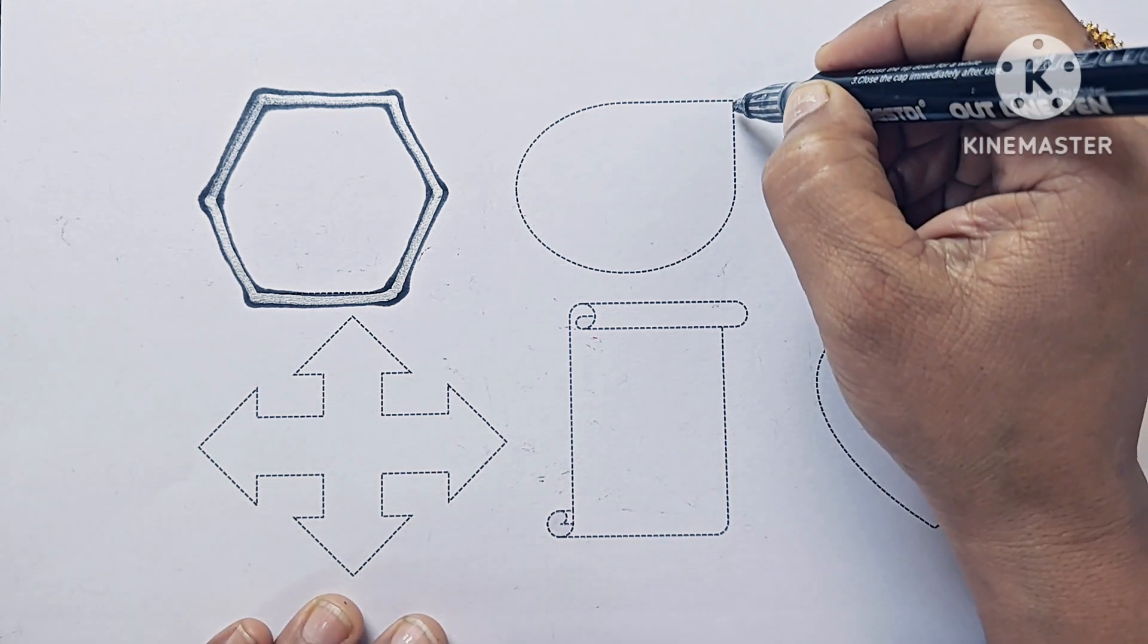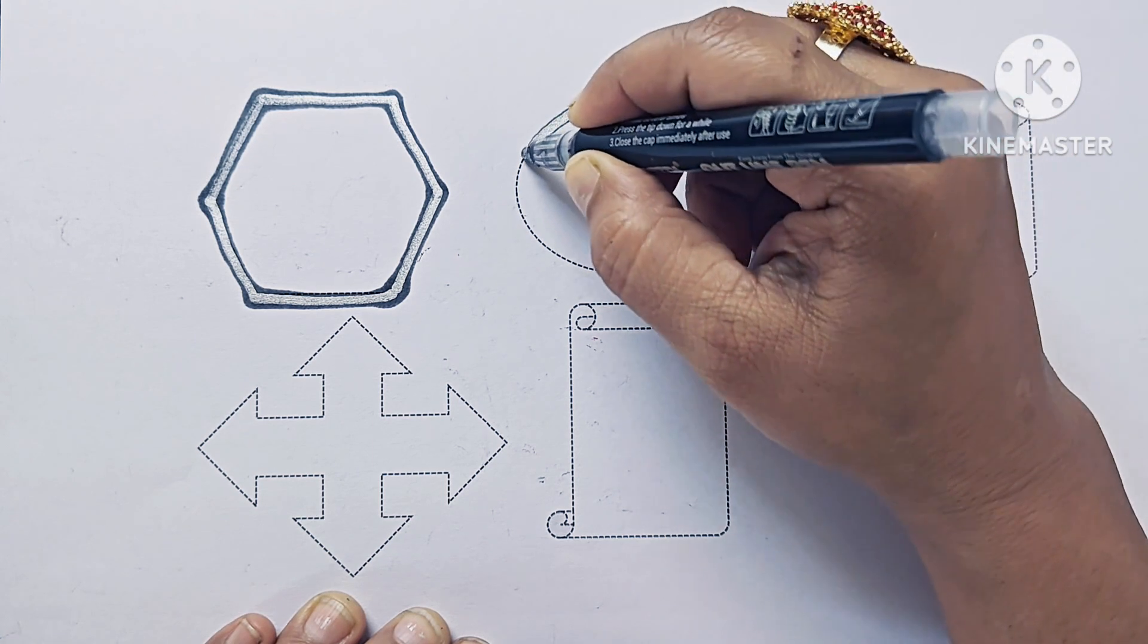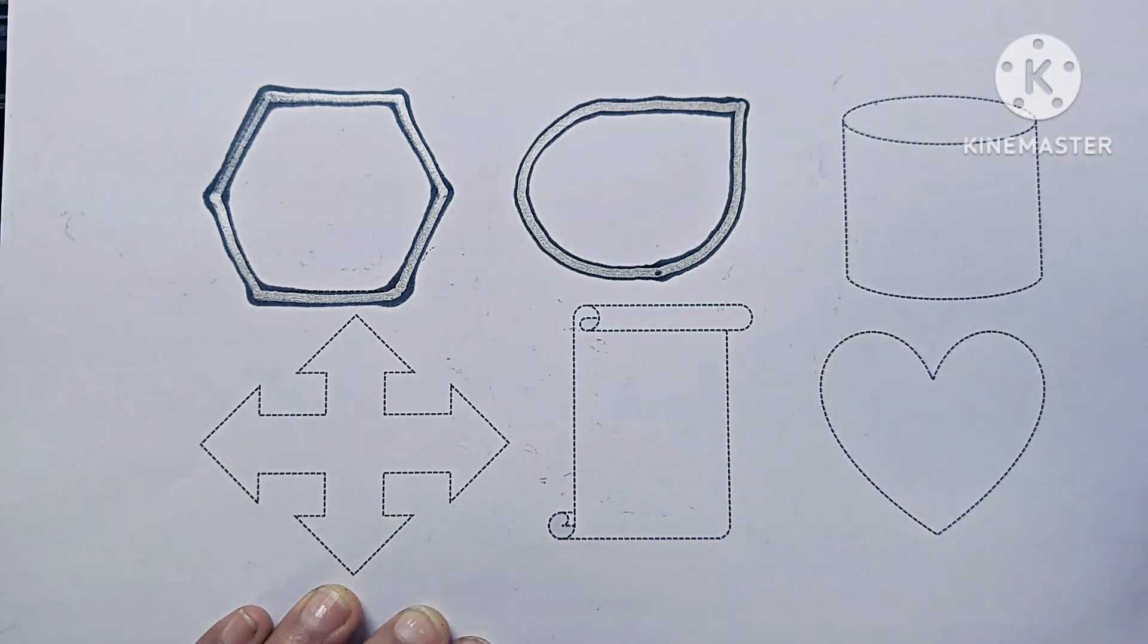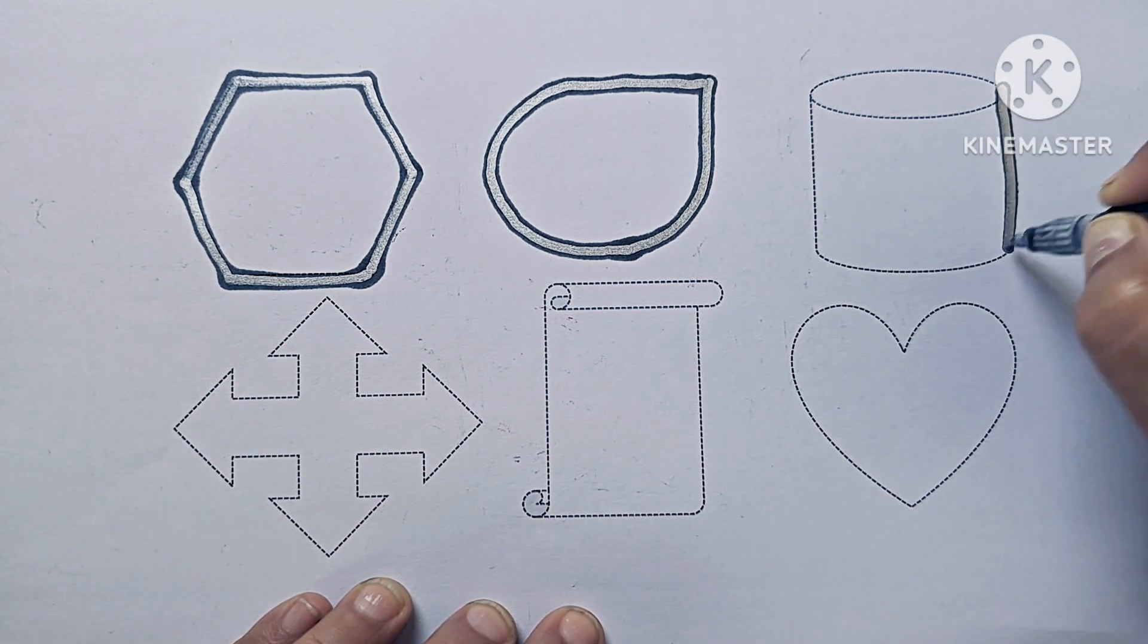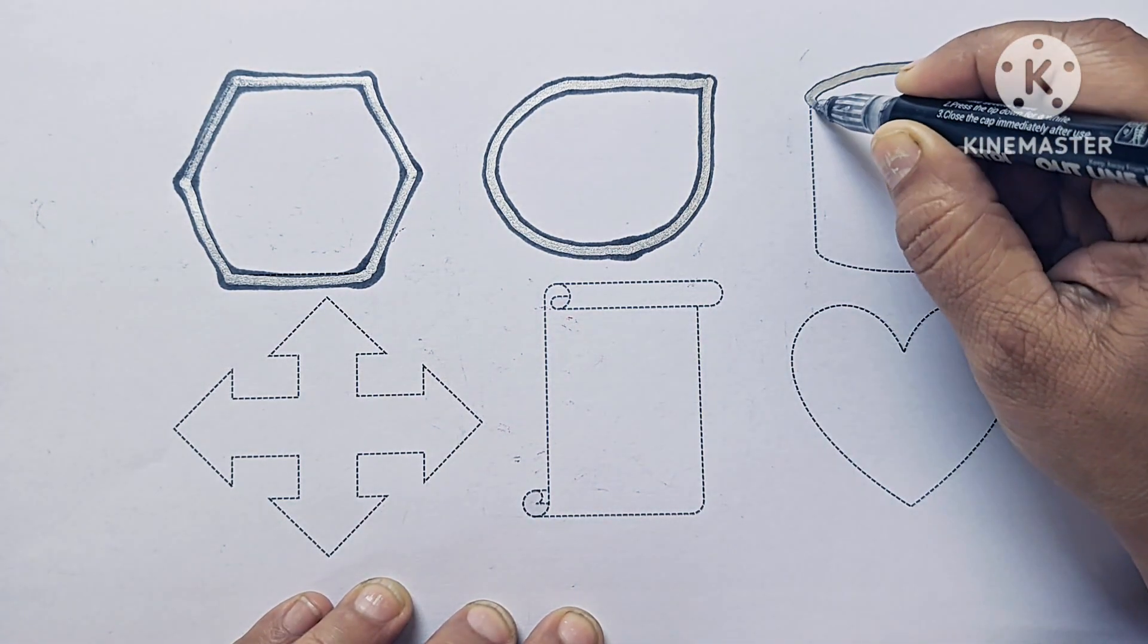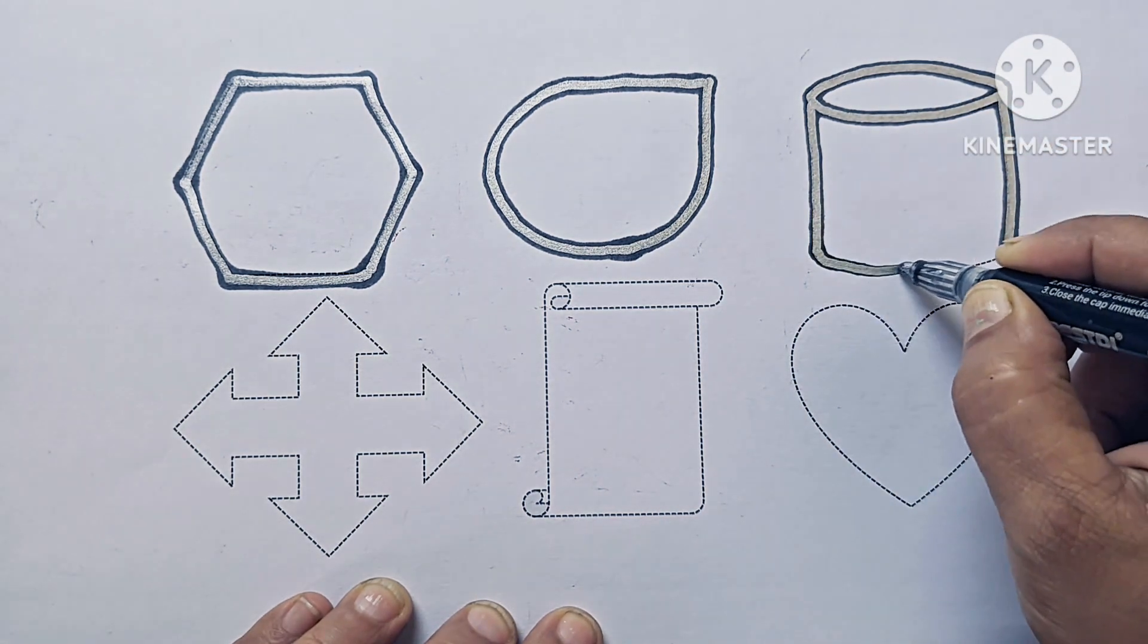This is Teardrop. This is Cylinder. Cylinder is a 3D shape. This cylinder has 3 surfaces.